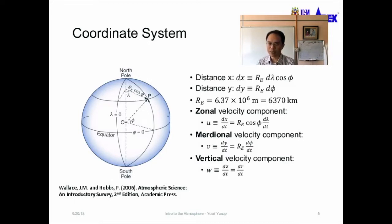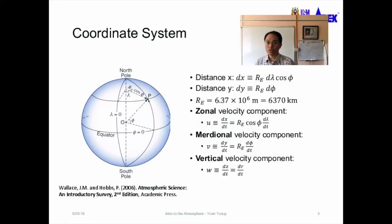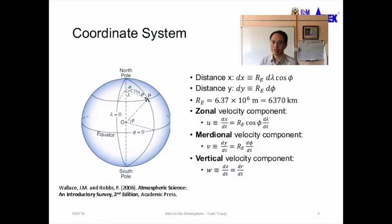We can also calculate the distance in the latitude direction, DY, which is approximately equal to the radius of the Earth RE multiplied by the difference in latitude, d-phi, in radians. There is also a set of terms you would see in the scientific literature on atmospheric science.